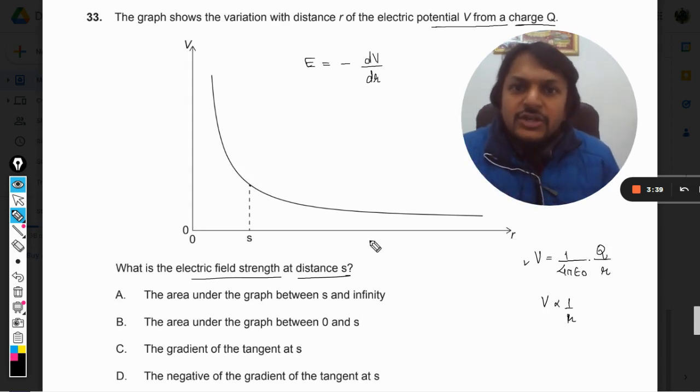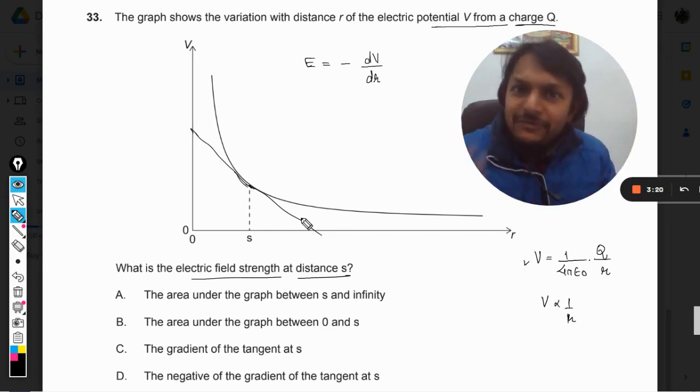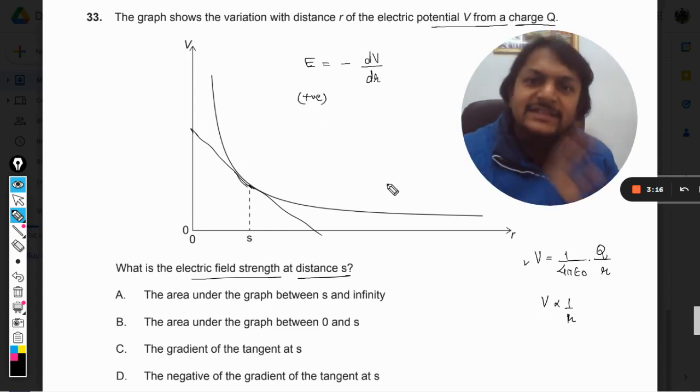So dV by dr at the point s, it's like just create a tangent here and you have to find the slope of this and the negative of this slope. We know that this slope is negative because it's moving down. The negative of the negative slope will give you a positive value. Electric field will be positive and this is how we find the electric field.